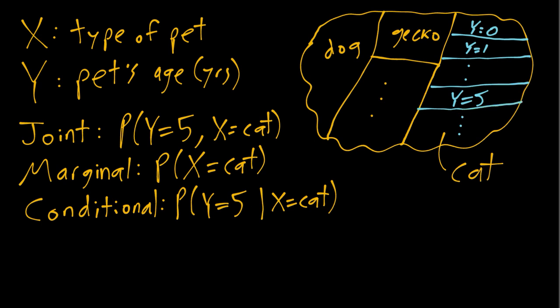The marginal distribution, the probability that X equals cat, is saying let's ignore all of these different age categories within cat and just think about the whole cat portion and how much of the total pet population that takes up. So that's the marginal probability of cat.